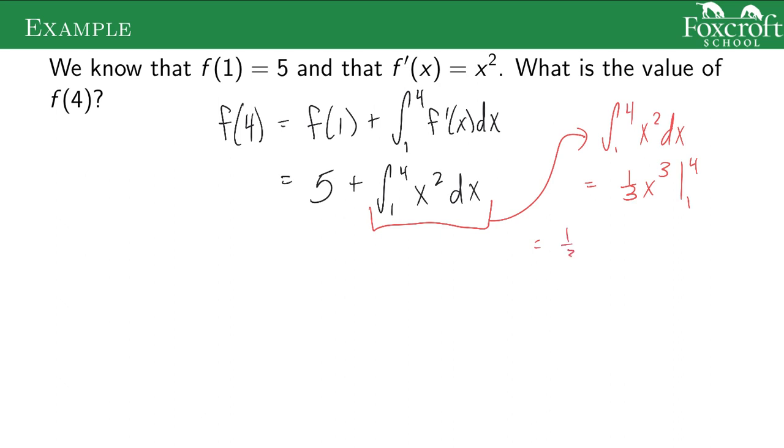So if I plug in 4 first, minus when I plug in 1, I get 64 over 3 minus 1 over 3, which equals 63 over 3.